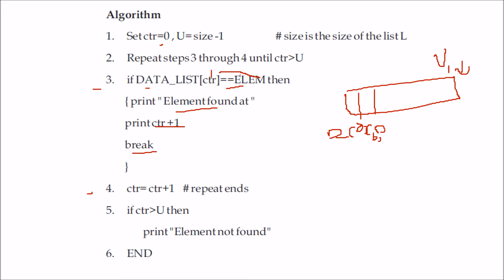We repeat this again and again. These two steps are in one loop. Once the element is found, we come out of the loop. If it doesn't happen for all elements and we reach the end, we say we were not able to find or search the value.